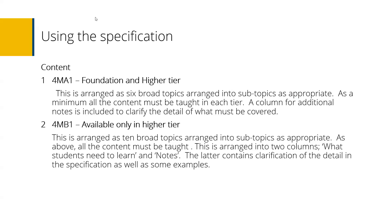Looking at how we use the specification — it will cover Specification A and Specification B. Broadly speaking, there are six topics in Specification A, whereas there are 10 broad topics in Specification B. Having this information and thinking about what's more appropriate for your students is key. All centres must deliver the content and students will be assessed on it.